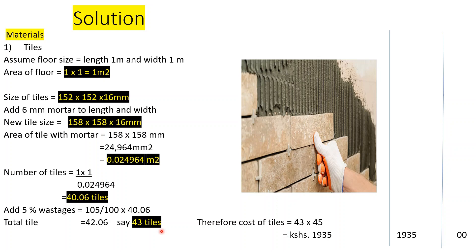So we will use 43 tiles for an area of 1 m × 1 m. This is based on our assumed floor size — in actual construction, take your actual floor area, find the total area, and calculate the number of tiles from there. The cost of the tiles is 43 × 45 = 1,935.